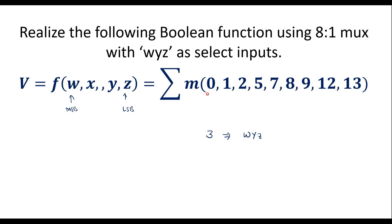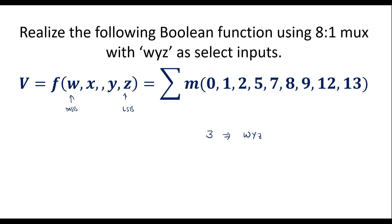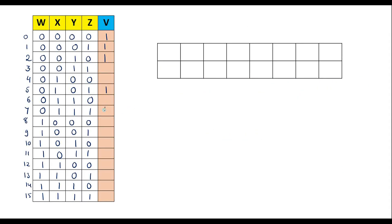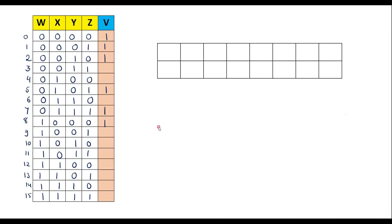Here it is said that for these values we are supposed to write the output as 1. These are the cell numbers where output is 1 — that is the minterms: 0, 1, 2, then we have 5, 7, 8, then 9, 12, 13. In all other cases the output is 0. This is the function we are supposed to implement using an 8-to-1 MUX.